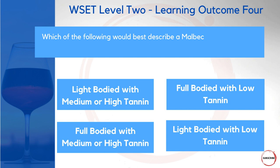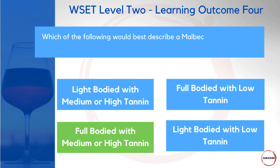So, which of the following would best describe a Malbec? Would it be light-bodied with medium or high tannin? Would it be full-bodied with low tannin? Would it be full-bodied with medium or high tannin? Or would it be light-bodied with low tannin? When we come to the geographical indicators you'll see we're talking about Argentina for Malbec. Malbec has a particularly full body in the glass, accompanied by medium or high tannins.